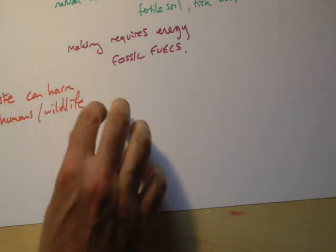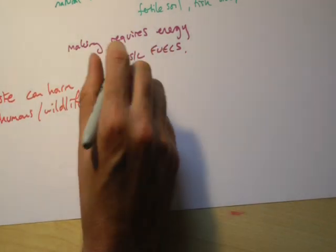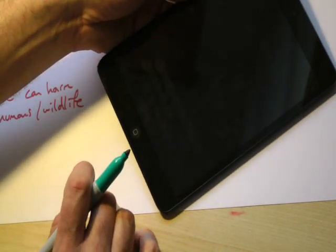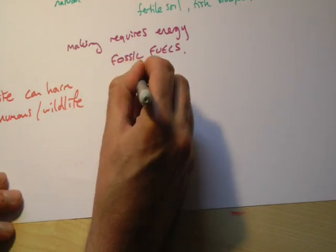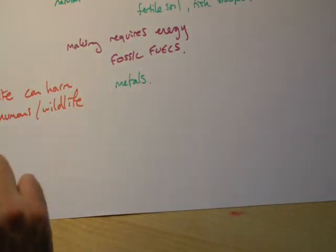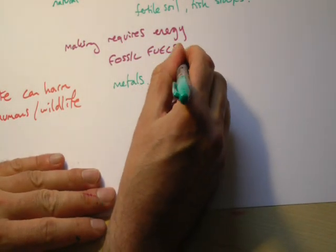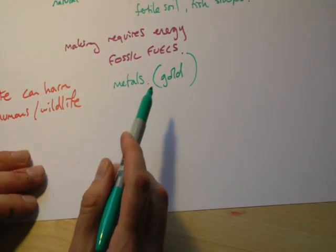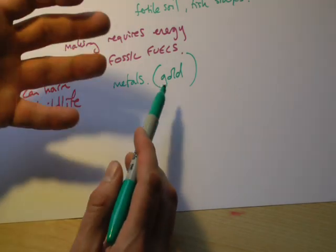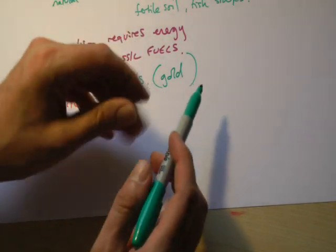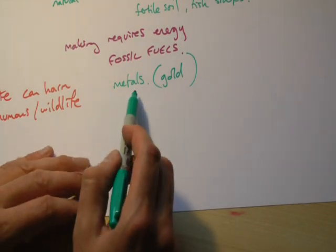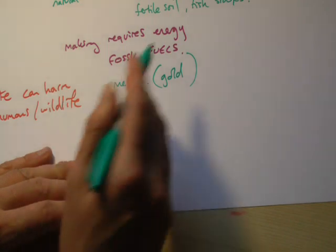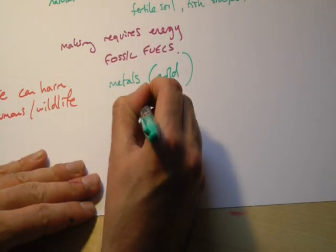Some waste actually contains things we'd really do well to keep hold of. For example, this tablet contains certain metals that are quite expensive — mobile phones do the same, things like gold. It's now becoming viable to send phones somewhere, break them apart, and take the metals out — only small amounts, but because there's so little of this stuff, it becomes worthwhile to extract things like gold from phones.